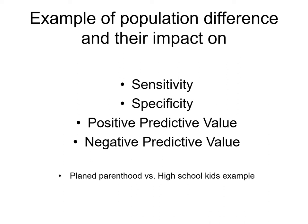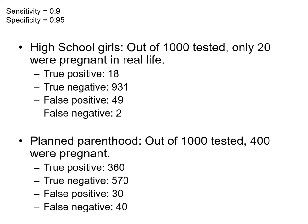For example, comparing Planned Parenthood versus high school students: in the high school group, testing a thousand students with sensitivity of 0.9 and specificity of 0.95 on a pregnancy test, only 20 out of 1000 are actually pregnant. Plugging in the numbers gives 18 true positives and 931 true negatives. In the Planned Parenthood group, out of a thousand tested, about 400 are actually pregnant.